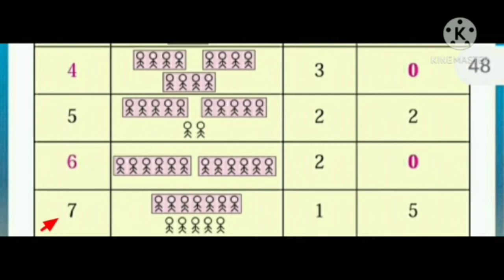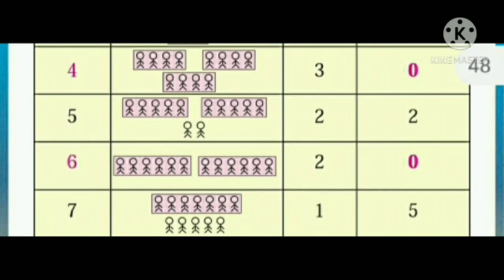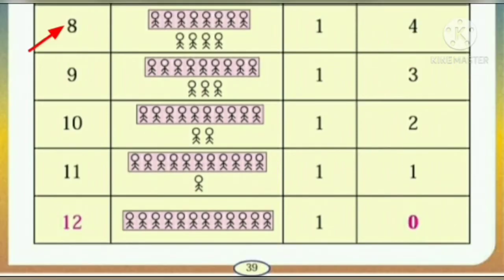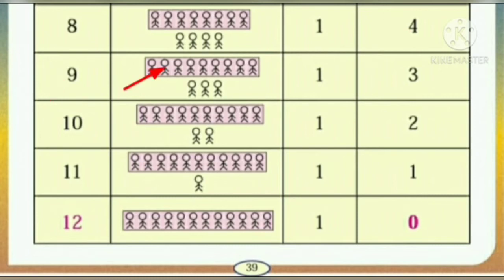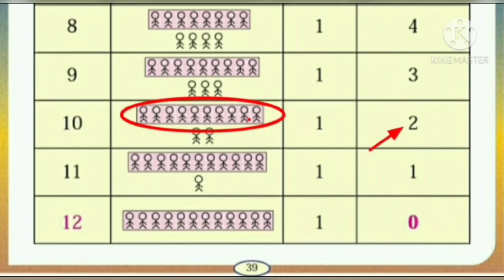I am going to tell the number 7. You have to make only 1 group of 7 members, and 5 members are left out. The next number is 8. Now you have to make 1 group of 8 members; 4 members are left out. The next number is 9 — 1 group of 9 members and 3 members are left. Then number 10 — 1 group of 10 members and 2 members are left out.